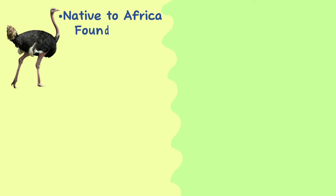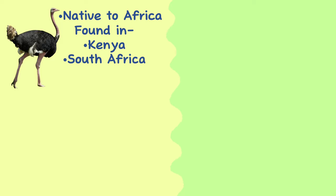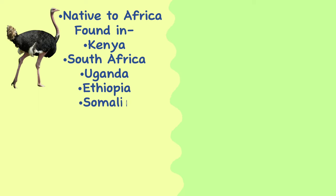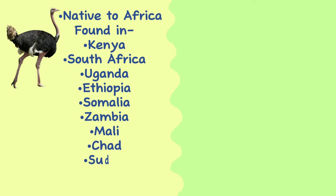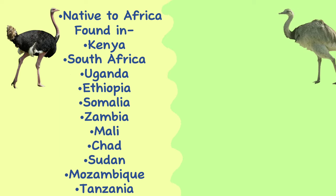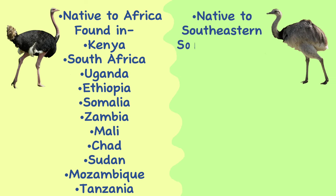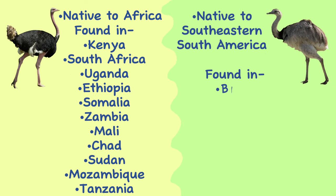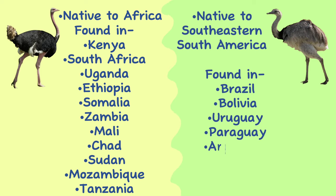Range. Ostriches are native to Africa and are found in various countries across the continent, including Kenya, South Africa, Uganda, Ethiopia, Somalia, Zambia, Mali, Chad, Sudan, Mozambique, and Tanzania. The greater Rhea is found in southeastern South America, including Brazil, Bolivia, Uruguay, Paraguay, and Argentina.